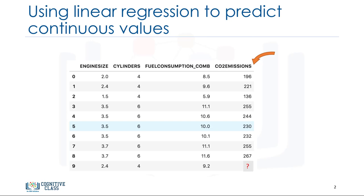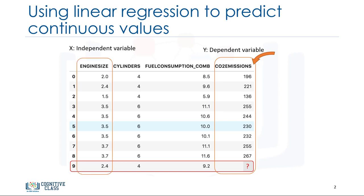Quite simply, yes. We can use linear regression to predict a continuous value such as CO2 emission by using other variables. Linear regression is the approximation of a linear model used to describe the relationship between two or more variables. In simple linear regression, there are two variables, a dependent variable and an independent variable.